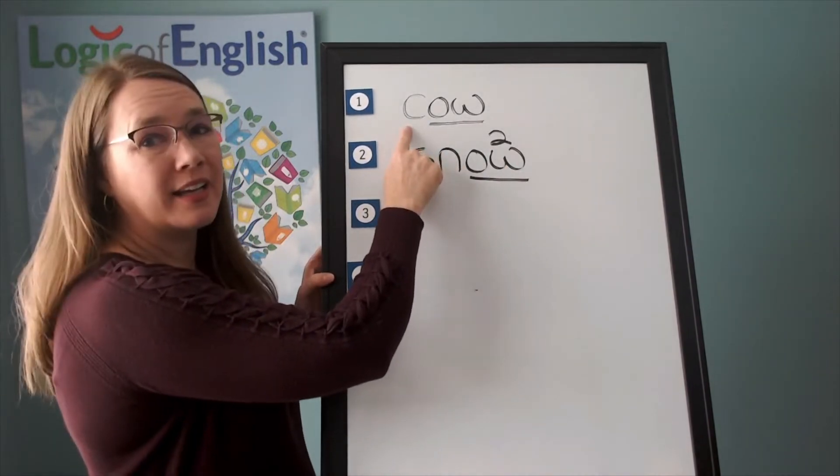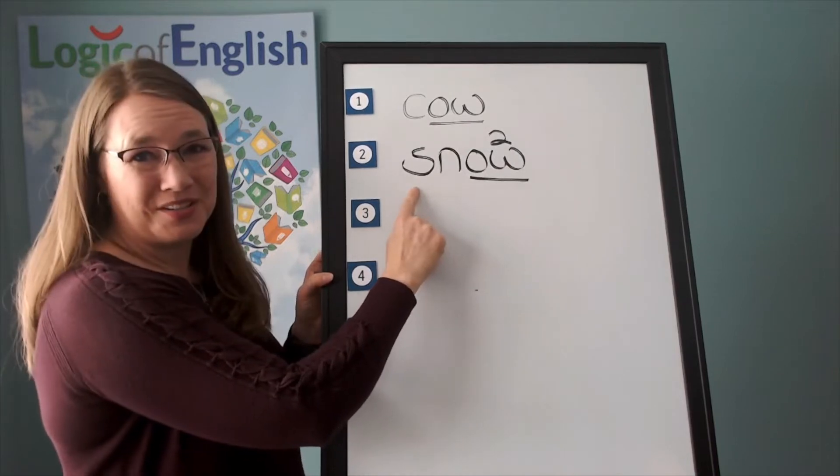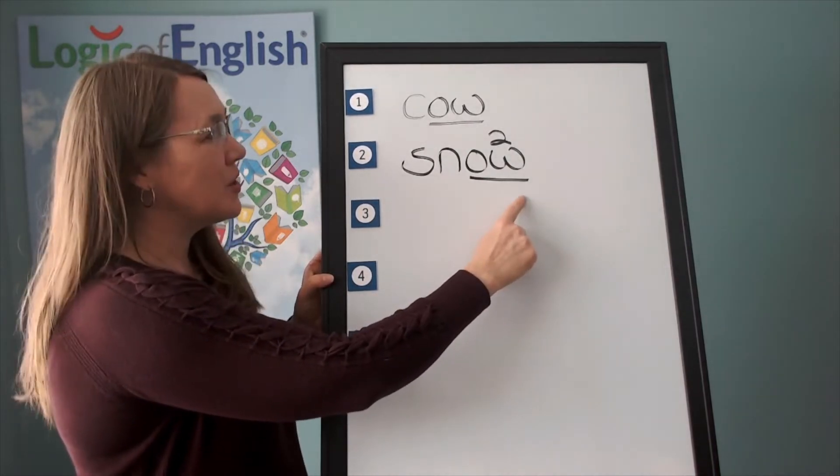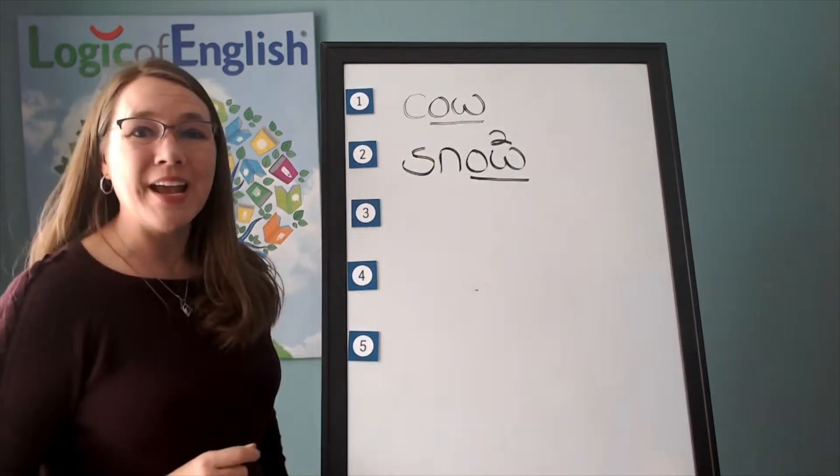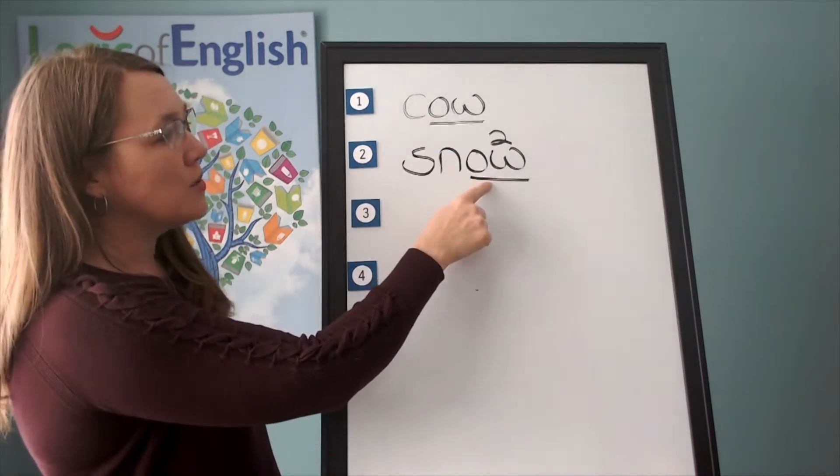Let's read this one. C-ow. Cow. Let's read this one. S-n-o. Snow. This is fun. We have two words that show both of the sounds. Ow-o.